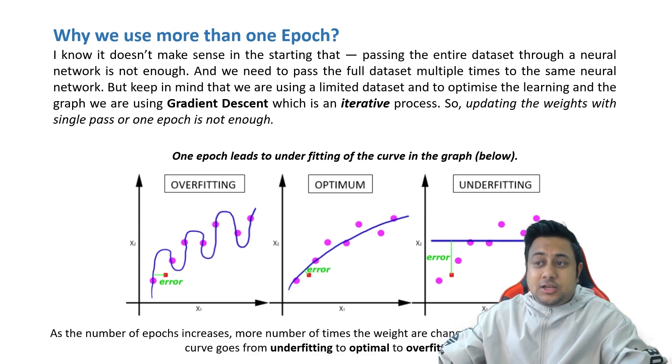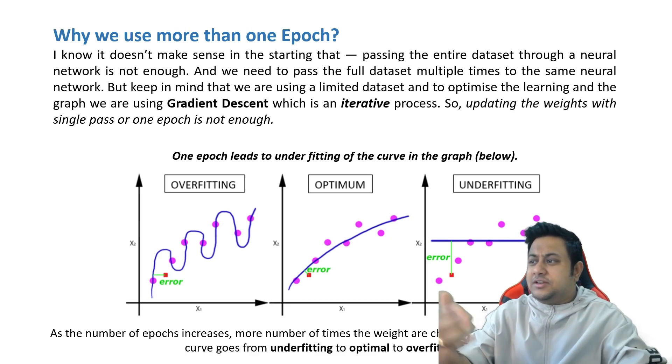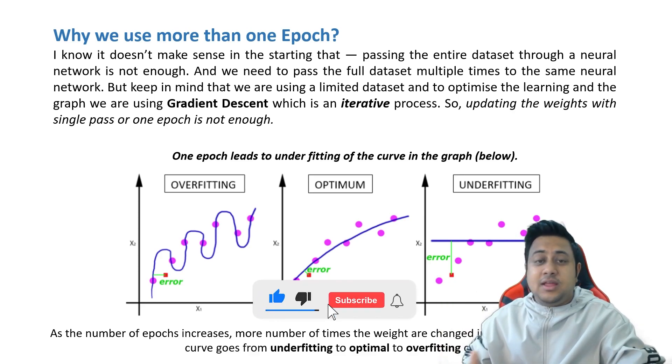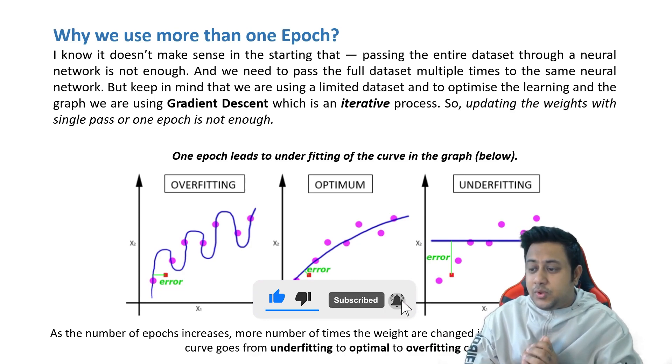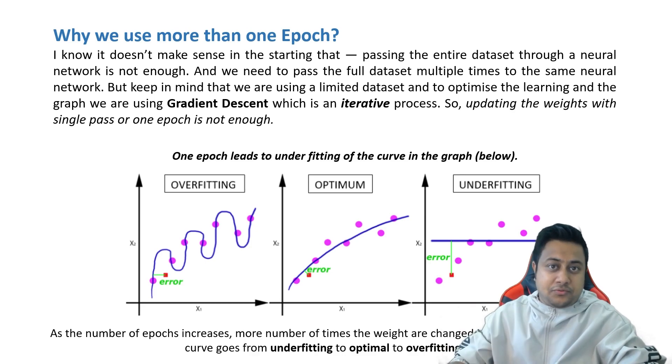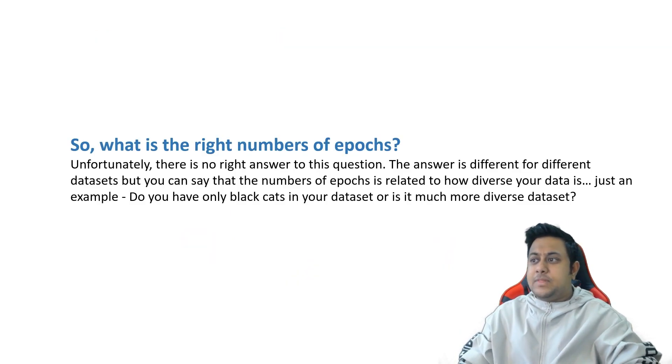Updating the weights with single pass or one epoch is not enough. These are the different scenarios of overfitting, optimum, and underfitting. As the number of epochs increases, more number of times the weights are changed in the neural network, and the curve goes from underfitting to optimal to overfitting curve.